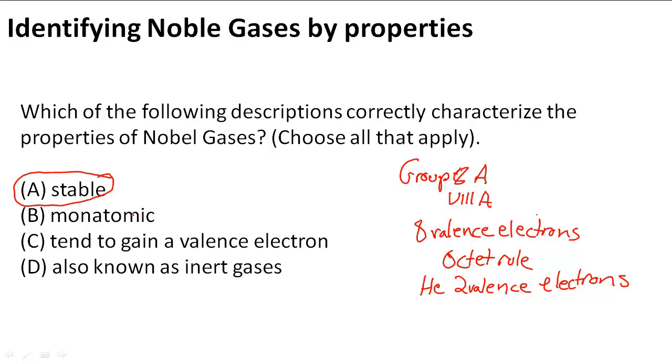Monatomic. Monatomic means that it usually exists as one atom. So any you might find floating around will most likely be floating around by itself because it doesn't need to react with another element to be stable. So B is true.